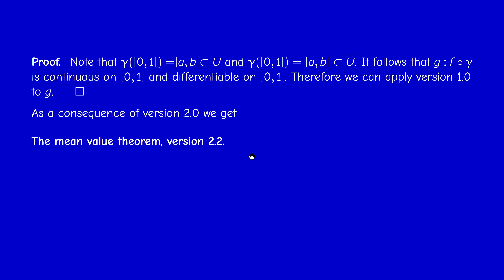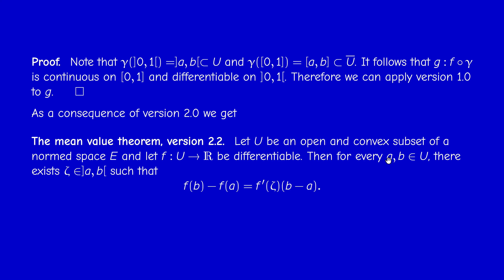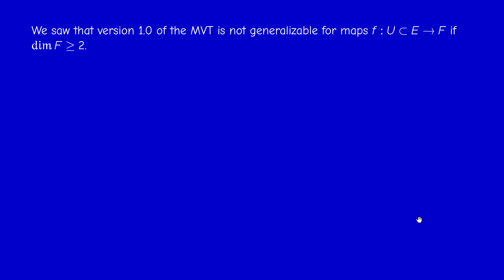Another consequence of Version 2.0 is Version 2.2: if U is open and convex and f is differentiable on U (real-valued), then for any two points a, b in U there exists a point ζ inside the segment joining a to b such that f(b) − f(a) = f′(ζ) · (b − a). This follows immediately from 2.0 because convexity of U ensures the whole segment [a, b] lies in U.